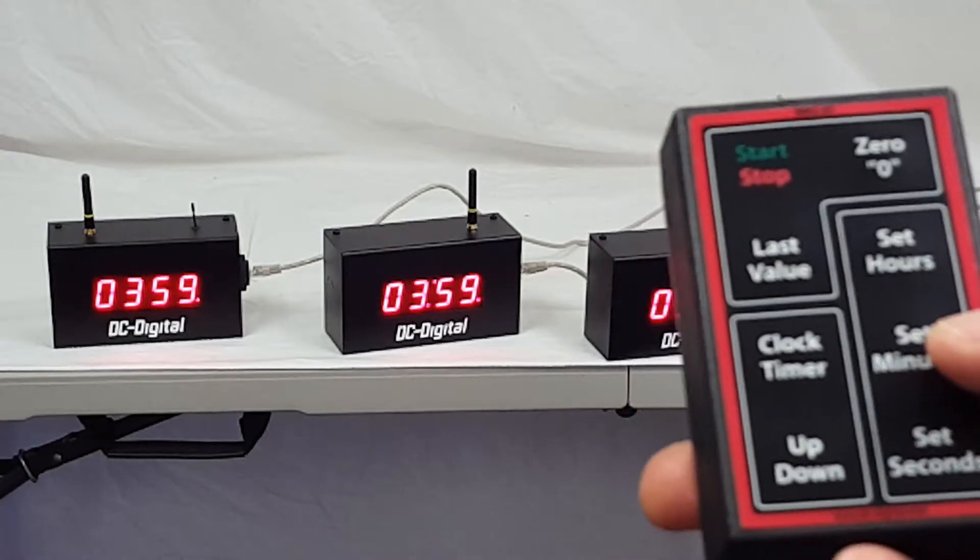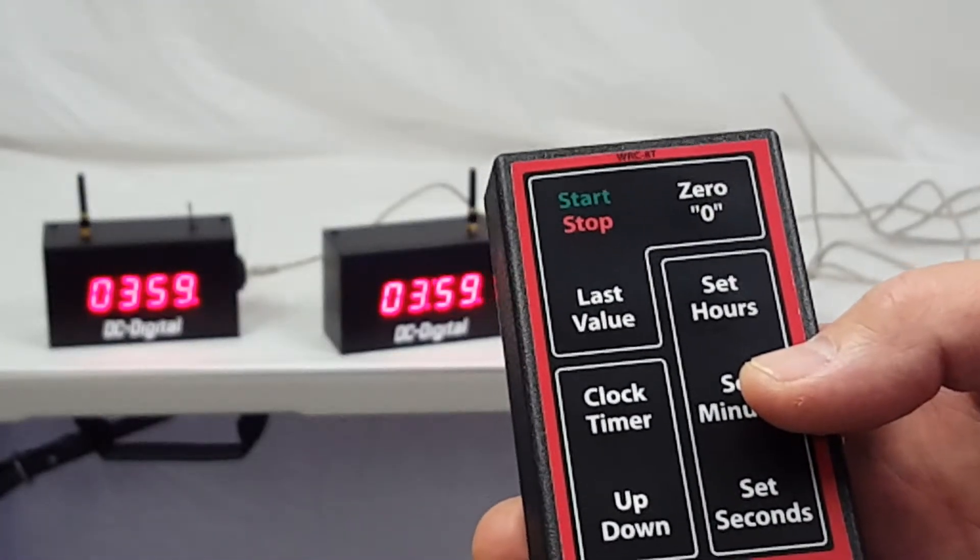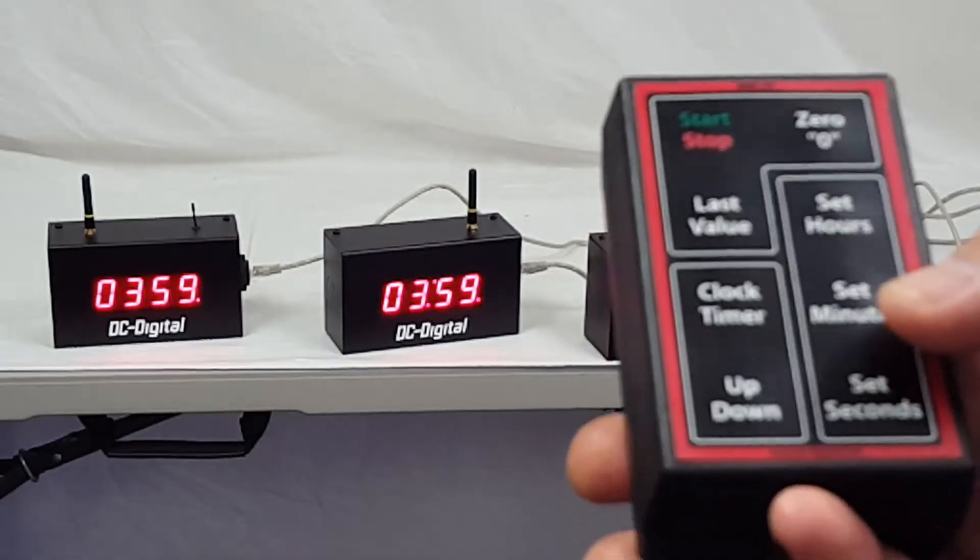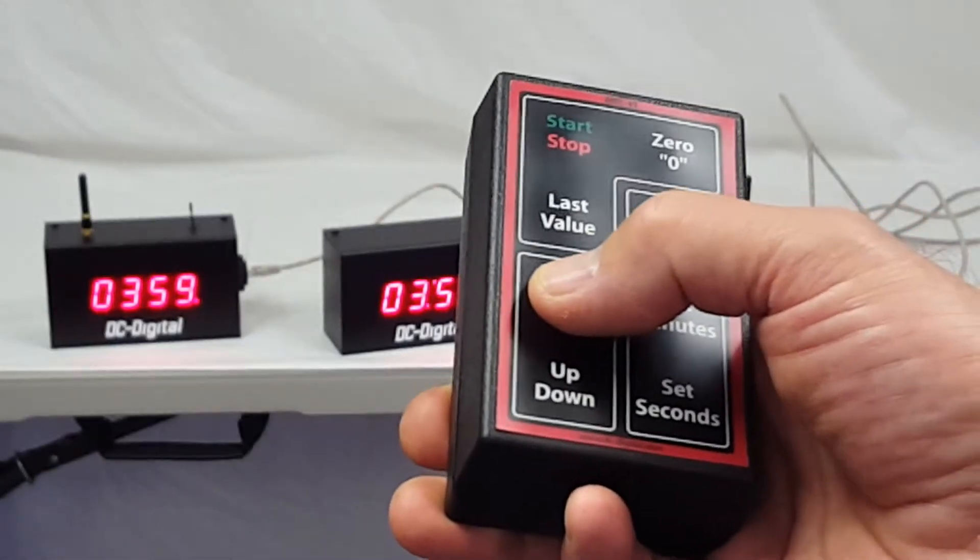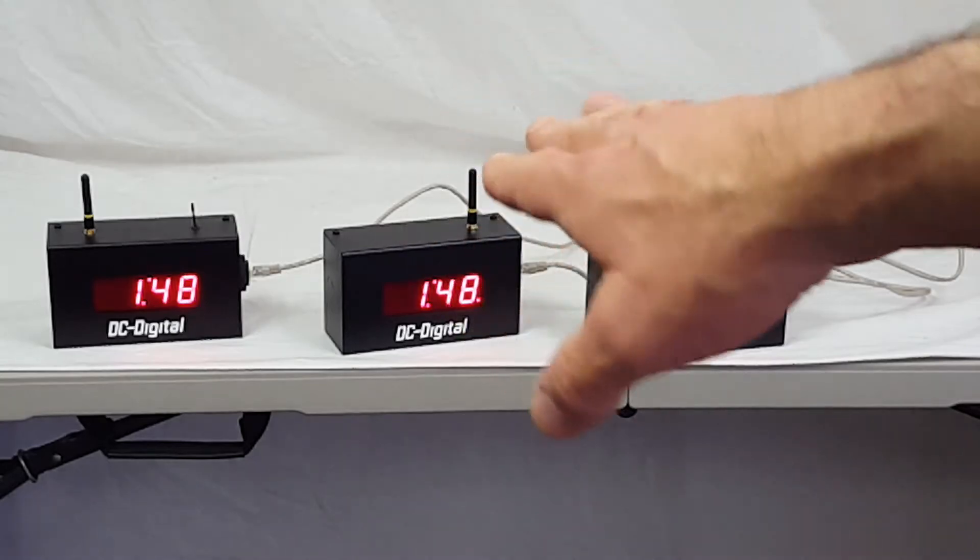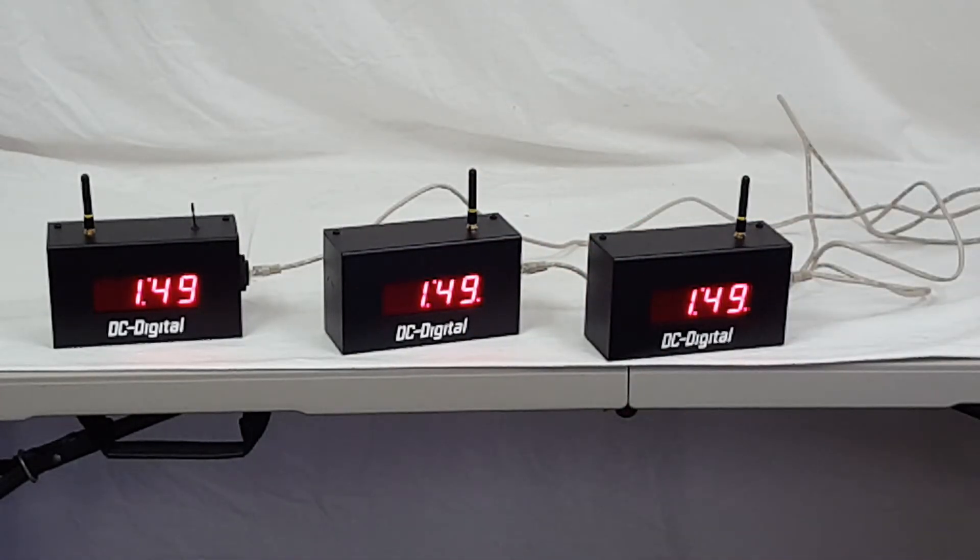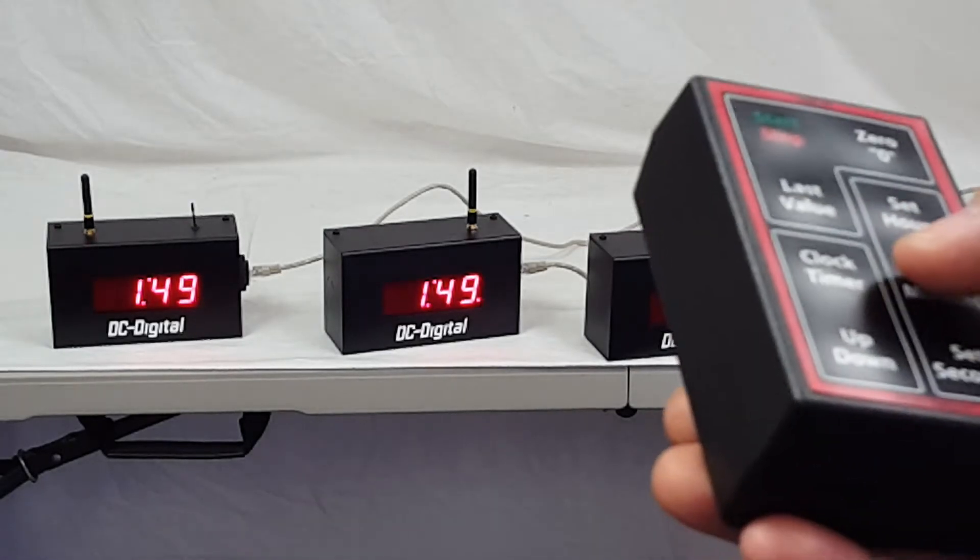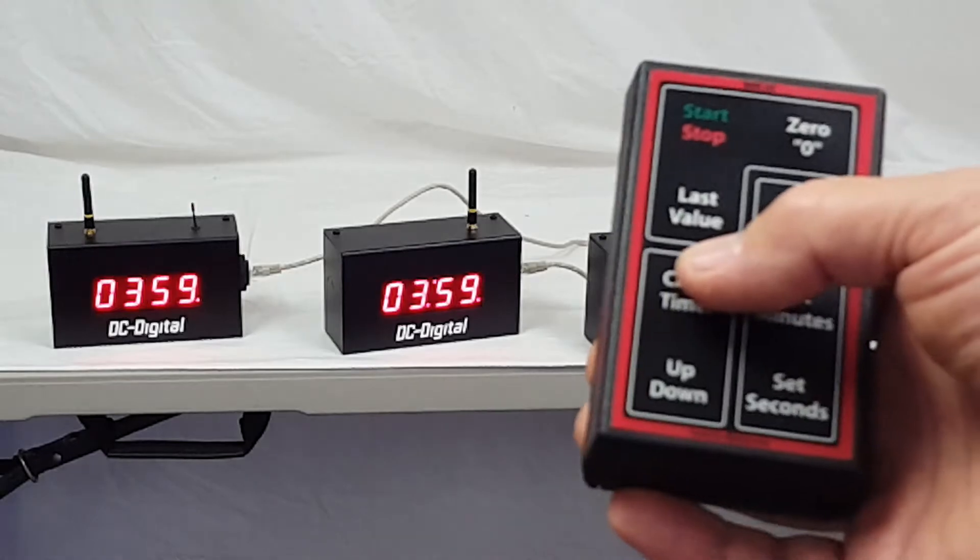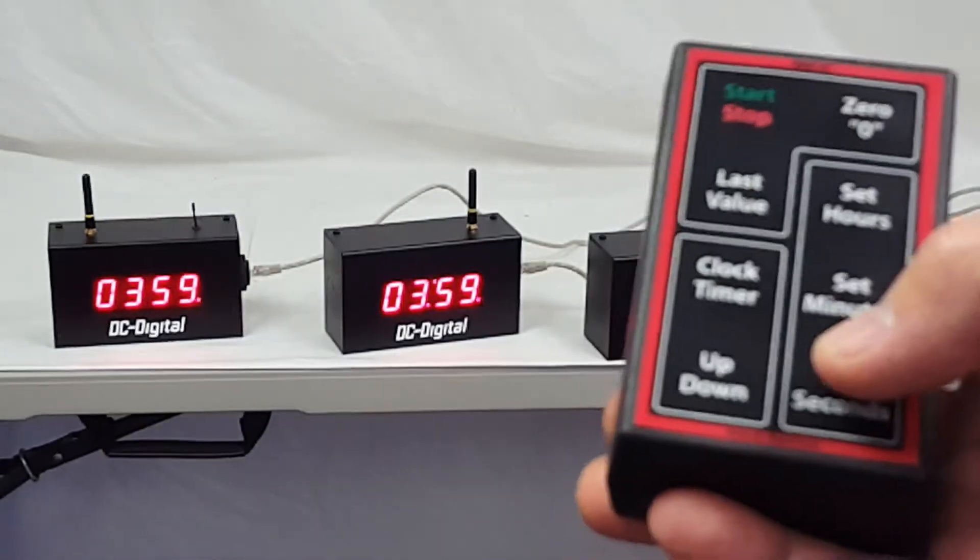When you're in hours and minutes mode, the colon flashes. So I'm going to let that run. We're going to switch it to clock mode. So we're at 1:48 in the afternoon. Now you can see that the lower right decimal point is flashing, indicating that your countdown timer is running. I'm going back to the timer mode, and as you can see, we're still 3:59 and we're still running.